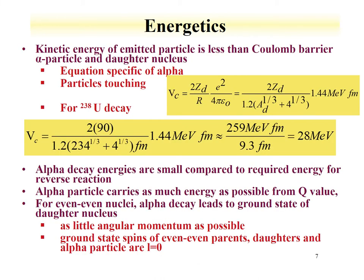One interesting observation about these energetics is that the alpha particle energy is often — and often far — less than the Coulomb barrier of the alpha particle and the daughter. In other words, the energy that it takes for an alpha particle to leave the nucleus is often much, much less than the energy needed to push that alpha particle into the daughter to reform the nucleus. We can evaluate this by evaluating the Coulomb barrier.